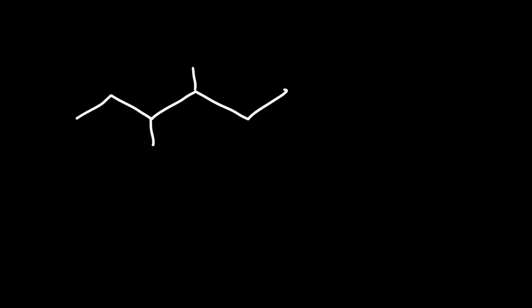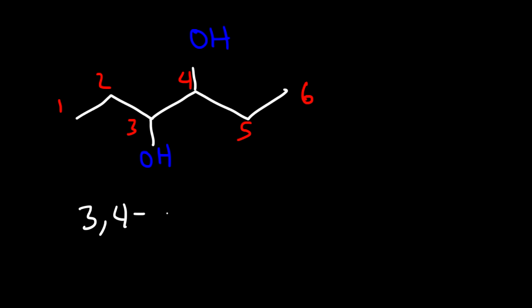Now what if we have two hydroxyl groups? How can we name the molecule in this case? For this example, it really doesn't matter which direction we count, because no matter what, we get an OH group at carbon three and at carbon four. Whenever you have two alcohols, it's known as a diol. So this is going to be 3,4-hexanediol, because there are six carbons in the parent chain.